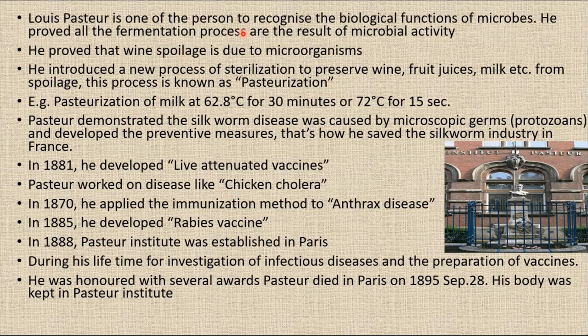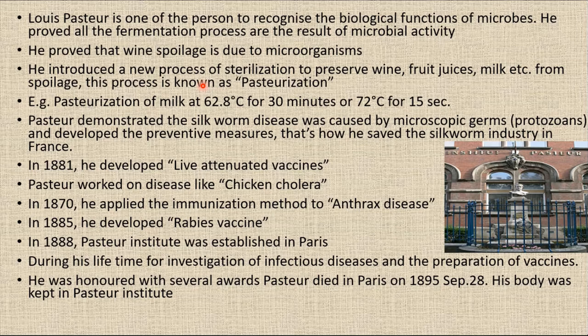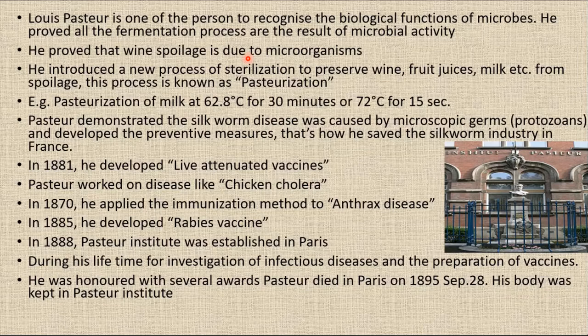Louis Pasteur was one of the first persons to recognize the biological functions of microbes. He proved that all fermentation processes are the result of microbial activity. While experimenting with wine, Pasteur observed yeast cells and bacteria responsible for wine fermentation. In a series of experiments he showed that a grape juice and yeast mixture turns into alcohol. He killed the yeast cells by applying heat and showed that alcohol is not formed in grape juice without yeast. When yeast was again added, alcohol formation reappeared, thus showing that microbes are responsible for turning the wine.